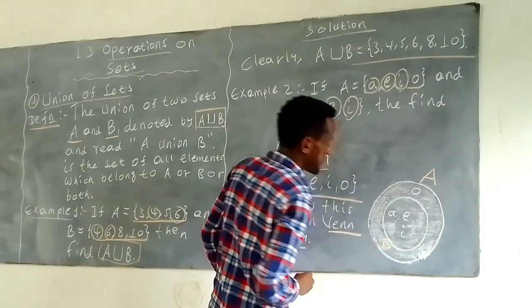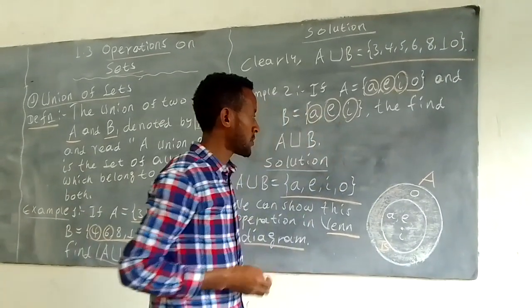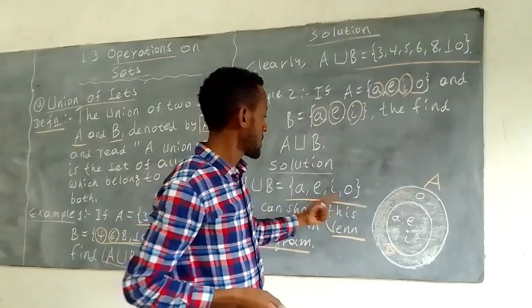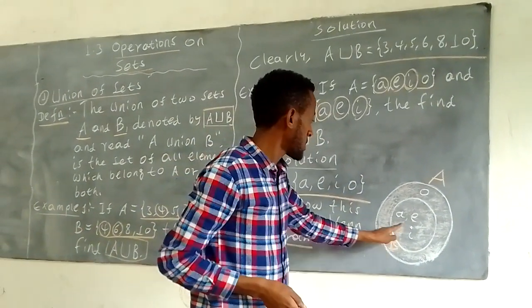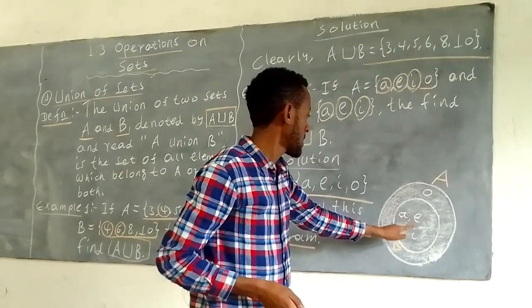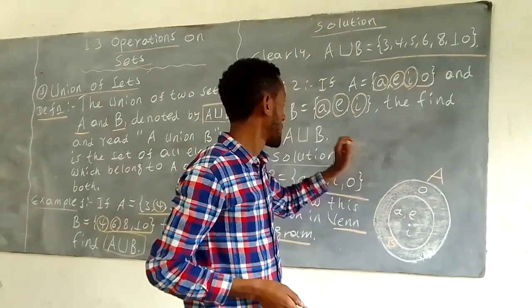A union B contains the elements A, E, I.